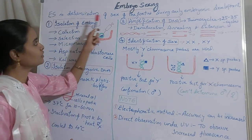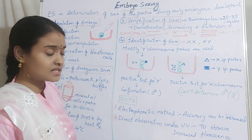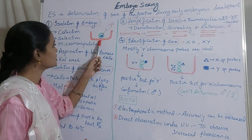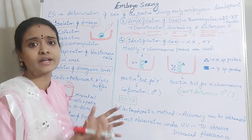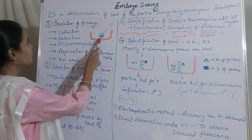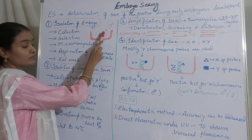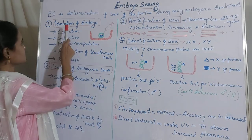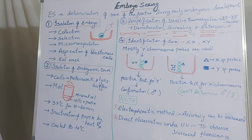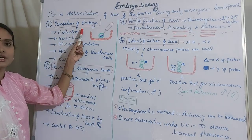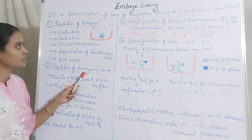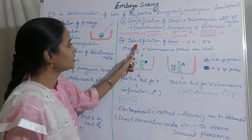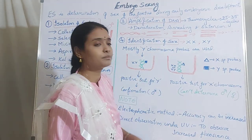Let us see how you are going to determine the sex of that developing fetus at the early stage. At the early stage the fetus is still a ball-like structure simply having the blastomere cells, or you can say a mass of cells. There are four steps: first is isolation of the embryo, second is isolation of embryonic DNA, third is amplification of the DNA, and fourth is identification of the cells using probes.